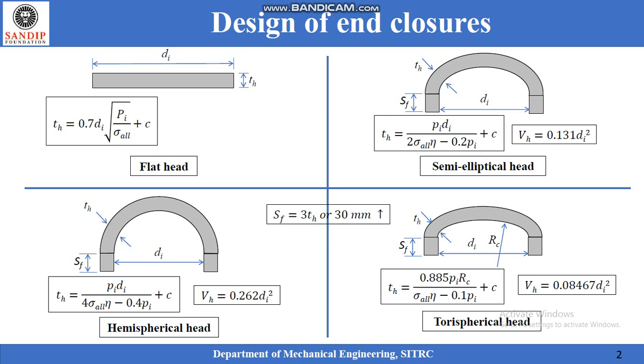Thus, the torispherical head looks like a torus and introduces an additional dimension called crown radius, denoted by RC. The torispherical head is smoothly merged with the main shell by giving a sharp radius at the end which is called knuckle radius.